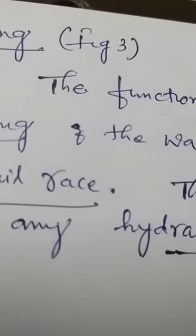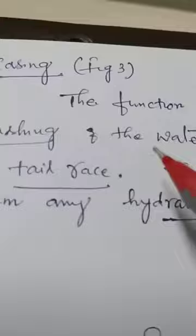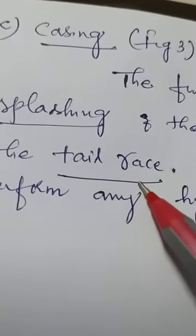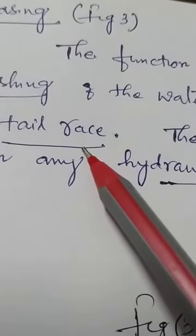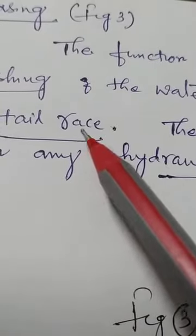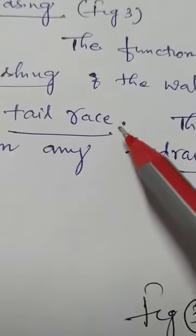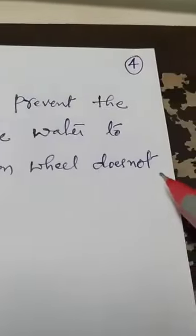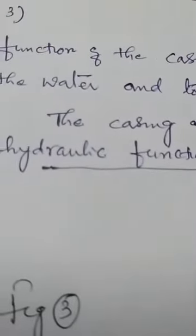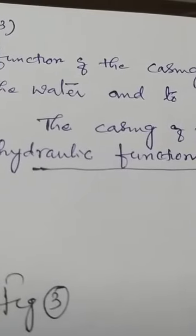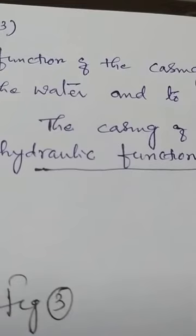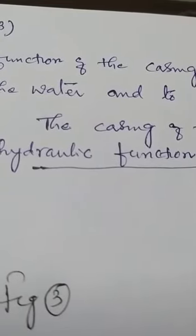The function of the casing is to prevent the splashing of water and to discharge the water to the tail race. The tail race is the channel provided to discharge the water from the turbine. The casing of the Pelton wheel does not perform any hydraulic function — even if it is not provided, there is no influence on the production of hydroelectric power. It is just for protection and to maintain cleanliness near the turbine.